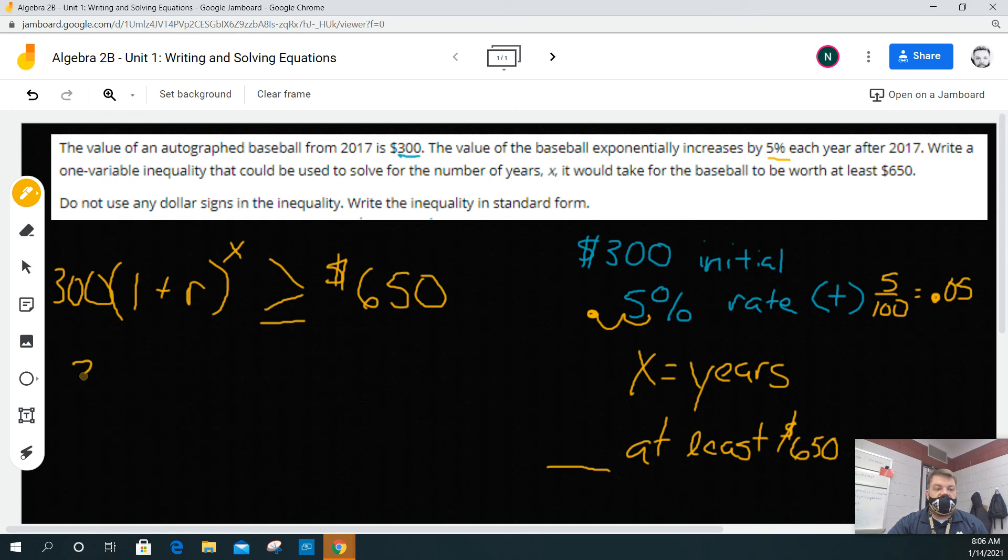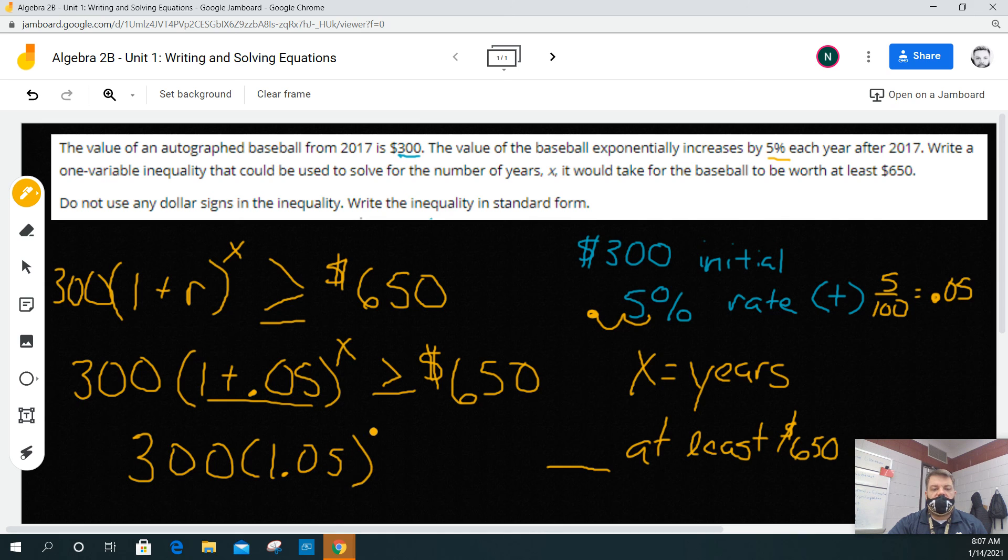So what I'm going to do is I'm going to say 300 times 1 plus the rate, which is 0.05, raised to the number of years, because each year you're going to multiply this, is greater than or equal to $650. And then in this particular case, you're going to say 300 times 1.05, raised to the X, is greater than or equal to $650.